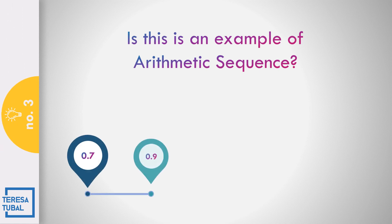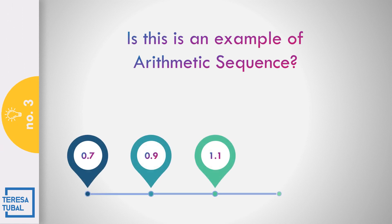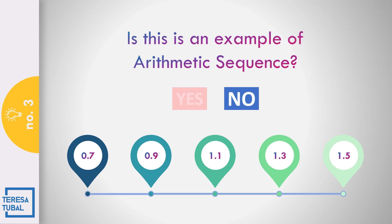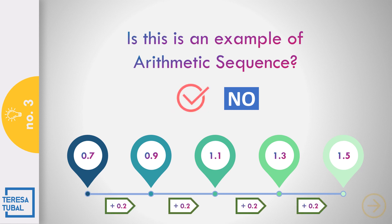How about number three? 0.7, 0.9, 1.1, 1.3, and 1.5. Do you think this is an example of arithmetic sequence? Correct. The answer is yes, because the common difference from first up to the last term is equal to 0.2.